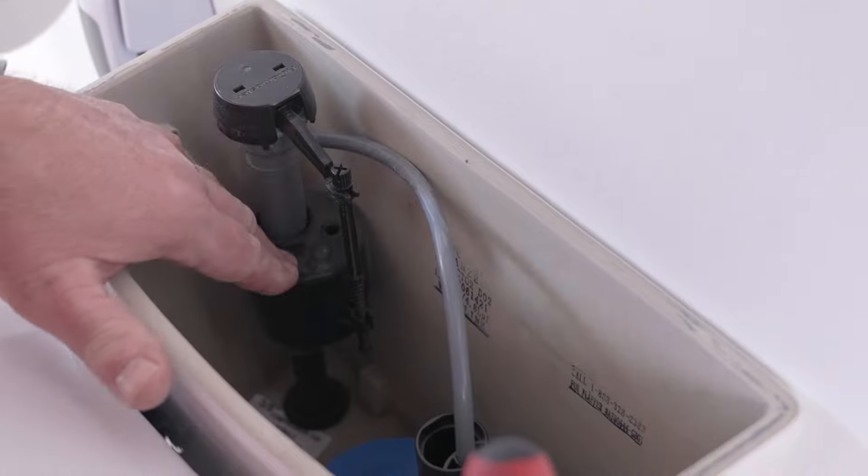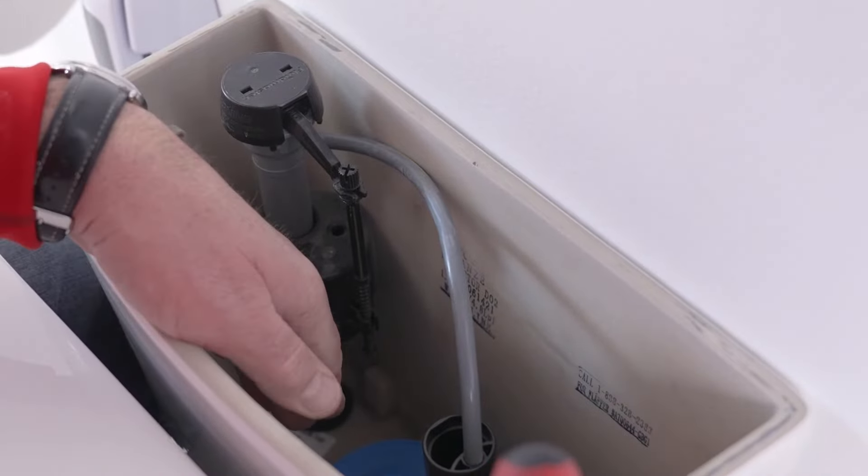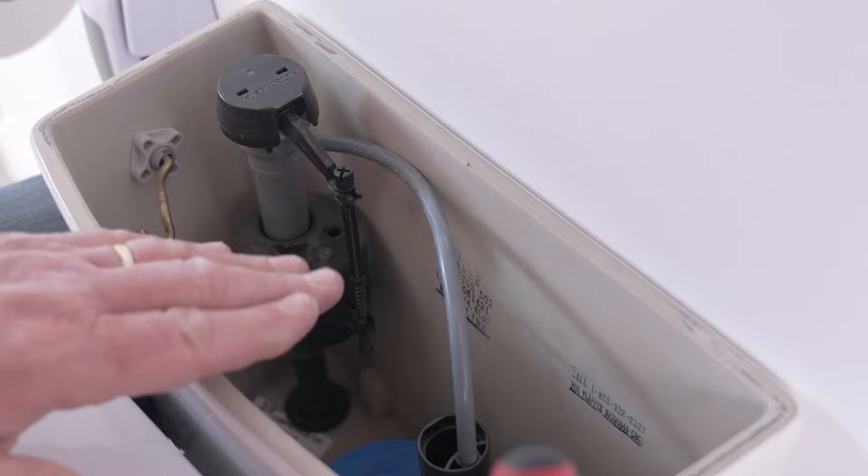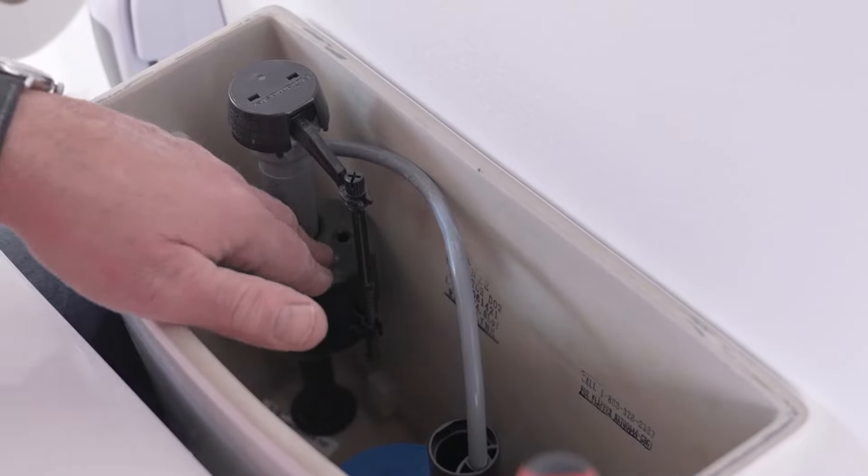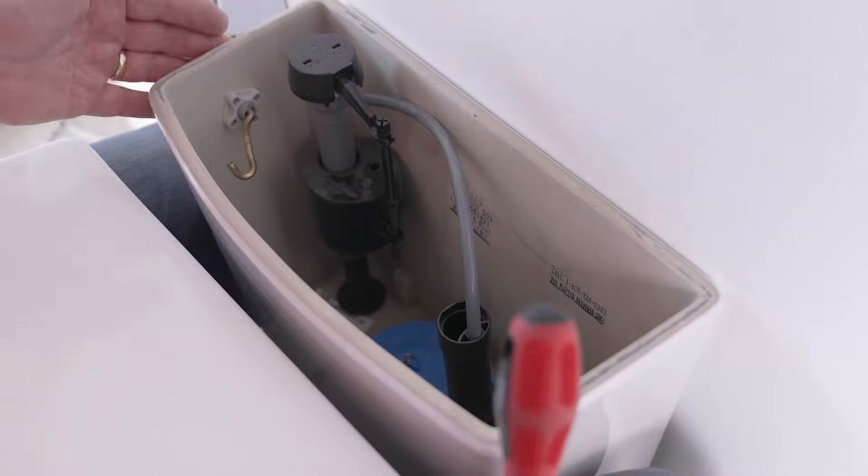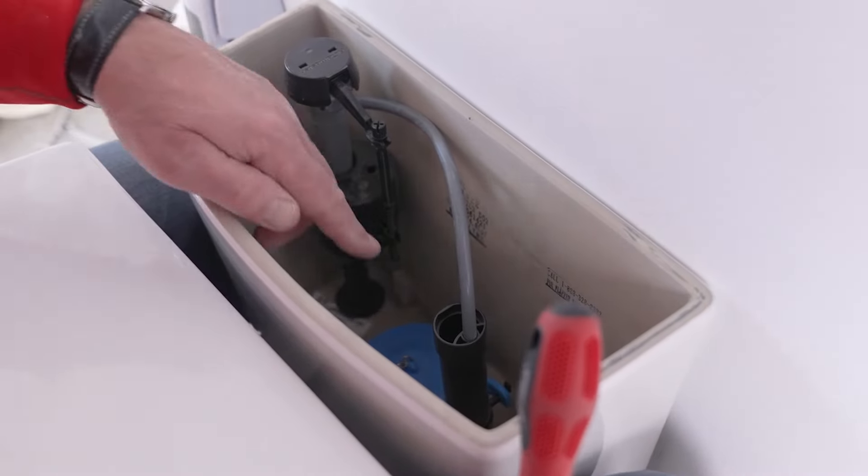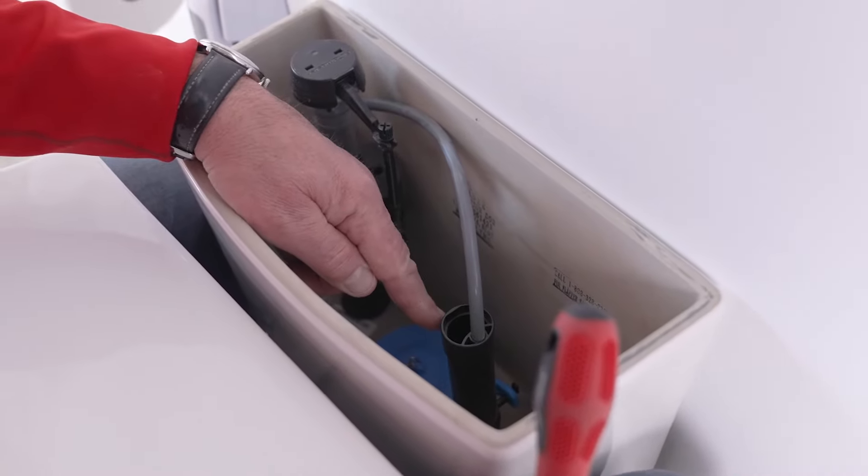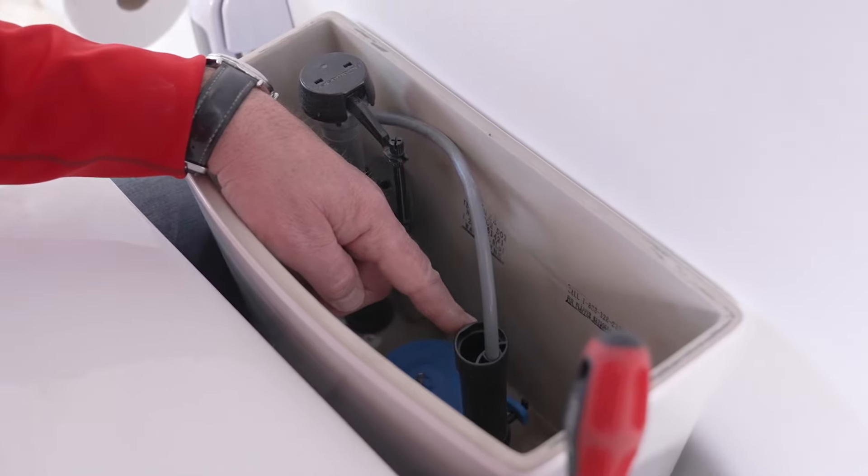Just remember, when the float is closer to the bottom of the tank, then the tank will hold less water. When the float is higher, further up from the bottom, the tank will hold more water. You just want to make sure that that level is about a half an inch below the overflow tube.